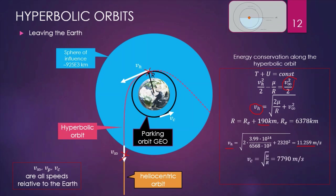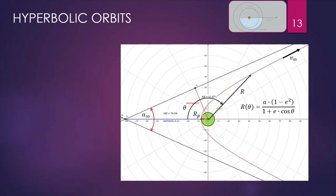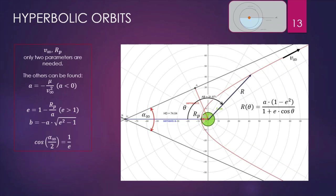The velocity of the circular orbit, given by this formula, is 7,790 m/s. The delta-V is the difference Vh minus Vc: 3,469 m/s. This is the delta-V that we need to apply when we are on the circular orbit in order to match the trans-Mars injection. It means that with this delta-V, at this position, we are capable of entering the hyperbolic orbit up to the heliocentric orbit around the Sun, without giving any other delta-V and without making any other maneuver. Here we are introducing some basic concepts about hyperbolic orbits with some formulas.